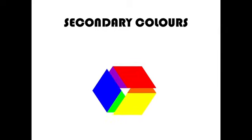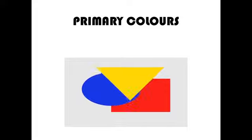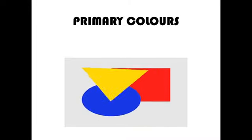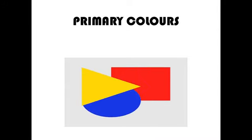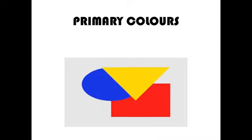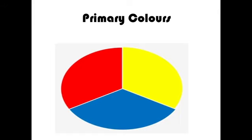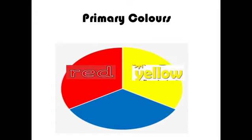These are all secondary colors. But first of all, we are going to revise primary colors. What are primary colors? Yes, we have learned about primary colors previously. Primary colors are red, blue, and yellow. You can see in the circle — these are primary colors: red, yellow, and blue.